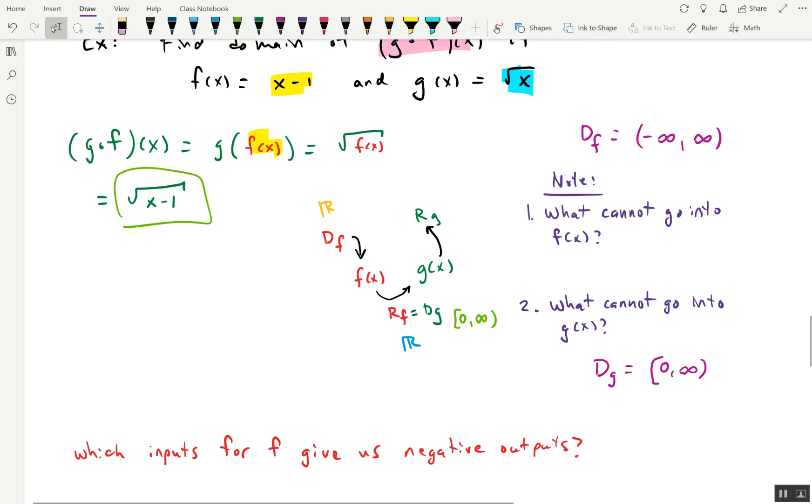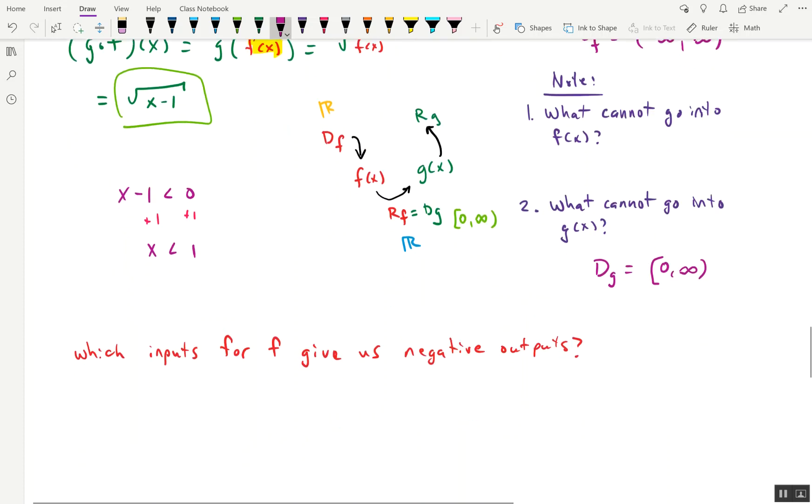Well, we can't have any negatives underneath this radical because it's an even index radical. There's an implied 2 right there, square root. So how do we know what values, what outputs of f, meaning the x minus 1, will give us a negative number? We can find that by simply taking the function f, or in other words, x minus 1, and we say, where is it negative? And then we solve for x. So if we add 1 to both sides, then we end up getting x less than 1. So any value of x less than 1, when plugged into f, will give us an output that's negative, and therefore can't go into g. So this is perfect.